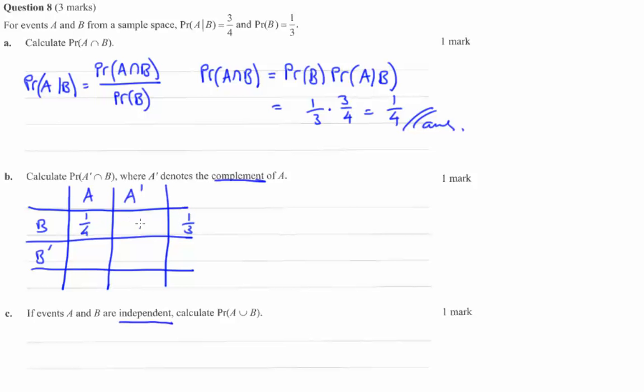And we know that this quantity here, which is A prime intersect B, has to add to a quarter to give a third. So one quarter plus something gives one third. So the probability of A prime intersect B is one third minus a quarter, which is four twelfths minus three twelfths, which is one twelfth. There we are.